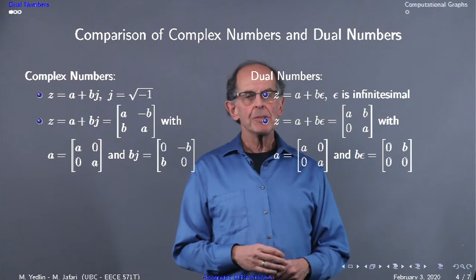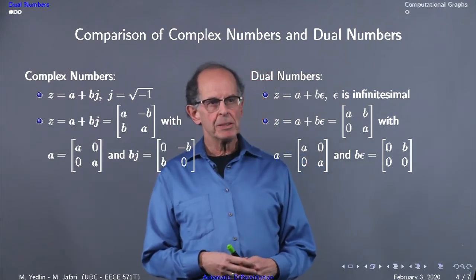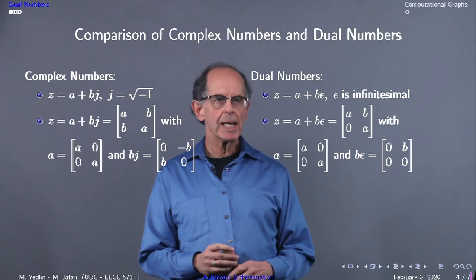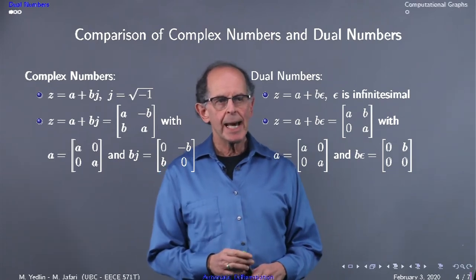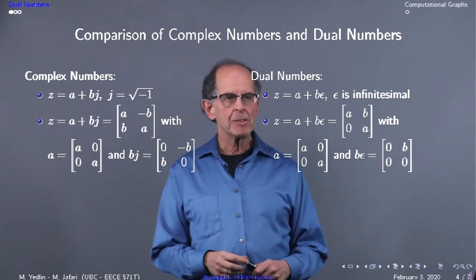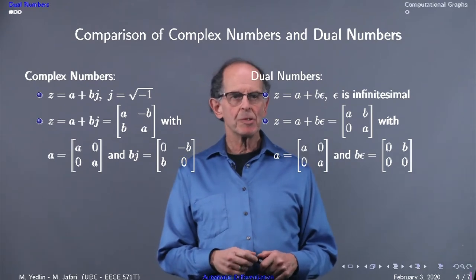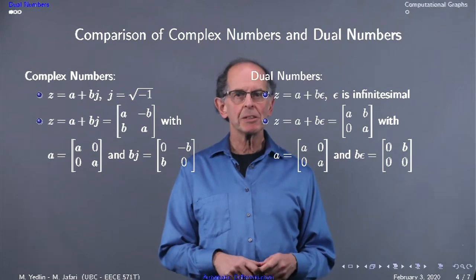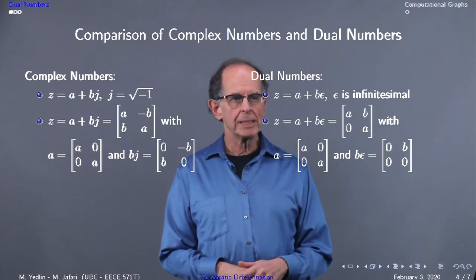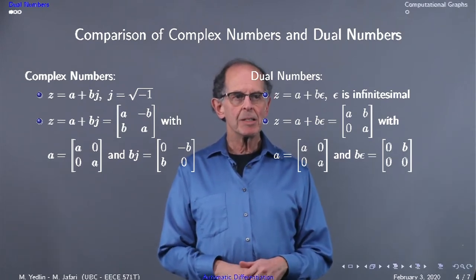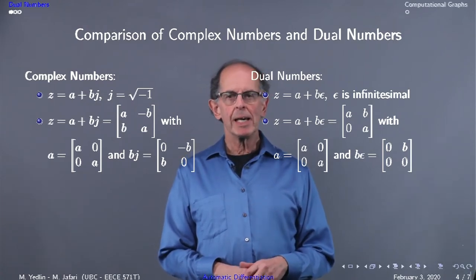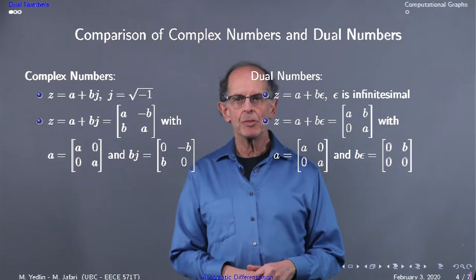Complex numbers can be represented as matrices with the diagonal as a, the real part, and anti-symmetrically b. Column one of z is [a, b] and column two is [-b, a], which is a 90-degree rotation. We can write a as diag(a) and bj as that anti-symmetric matrix.